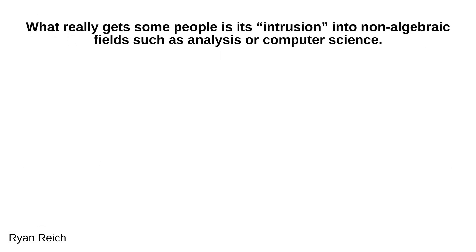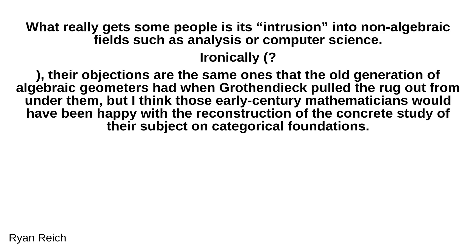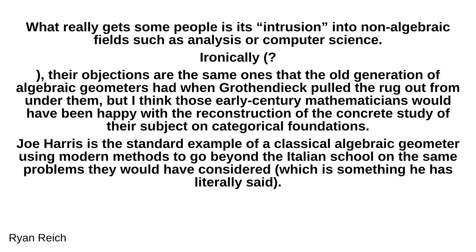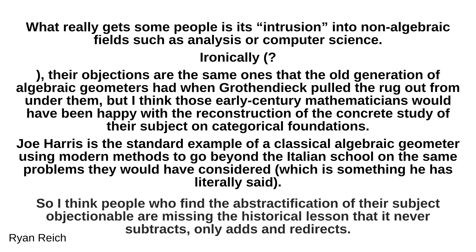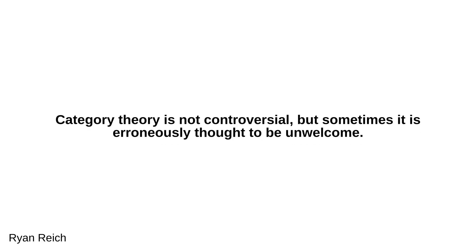What really gets some people is its intrusion into non-algebraic fields such as analysis or computer science. Ironically, their objections are the same ones that the old generation of algebraic geometers had when Grothendieck pulled the rug out from under them. But I think those early-century mathematicians would have been happy with the reconstruction of the concrete study of their subject on categorical foundations. Joe Harris is the standard example of a classical algebraic geometer using modern methods to go beyond the Italian school on the same problems they would have considered. So I think people who find the abstractification of their subject objectionable are missing the historical lesson that it never subtracts, only adds and redirects. Category theory is not controversial, but sometimes it is erroneously thought to be unwelcome.